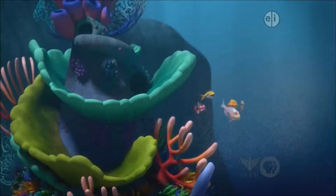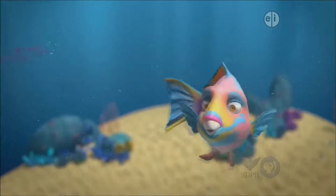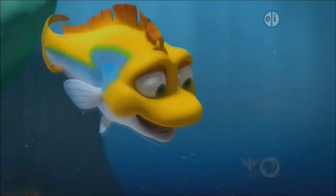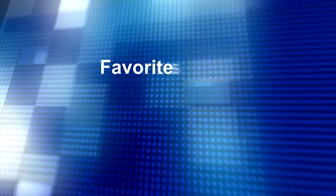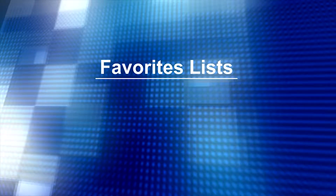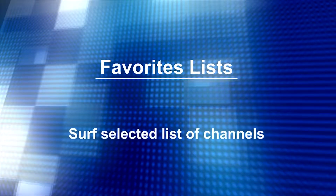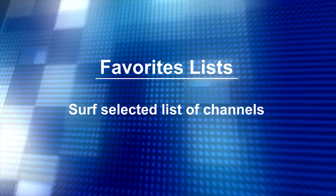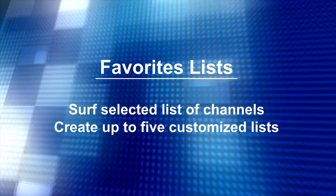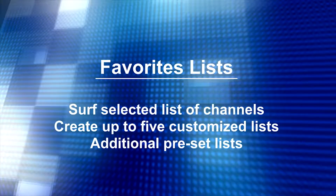There are dozens, even hundreds of channels available for viewing, but most people watch just a few of their favorites. Your service allows you to create favorites lists within your guide in order to surf selected lists of channels. You can create up to five customized favorites lists, in addition to several that are preset within your service, such as sports and kids programming. Here's how to create and work with them.